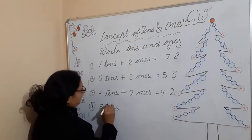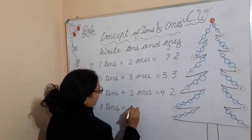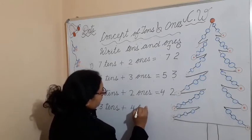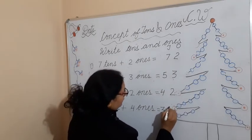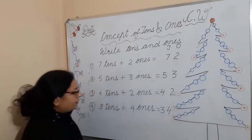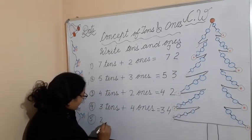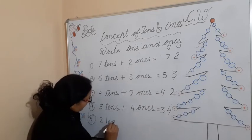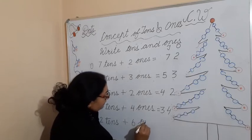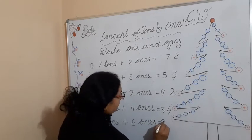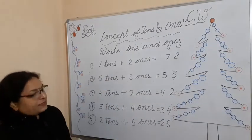Fourth example: three tens plus four ones — that becomes thirty-four. Last one: two tens plus six ones — that becomes twenty-six. Do the practice again and again in this way.